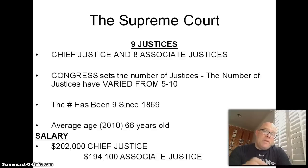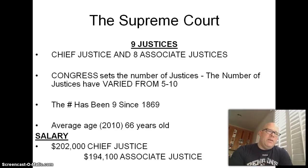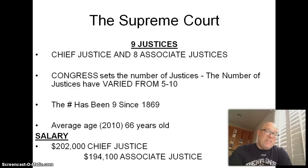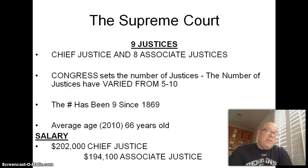There are nine justices — a chief justice and eight associates. Congress can set the number of justices on the Supreme Court; it has varied between five and ten throughout history, but the number nine has been in place since 1869. The average age of a justice is about 66 years old, a little older than the average member of Congress. The Chief Justice makes a little over $200,000 and Associate Justices make about $194,000 — in private practice these lawyers would generally make a lot more, so it is a job of prestige rather than pay.